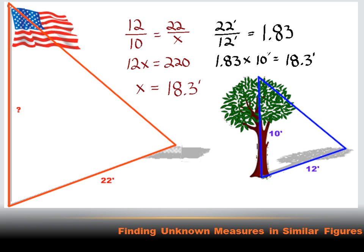We could do this another way too — we could create a proportion. We could say that 12 feet is to 10 feet as 22 feet is to x feet. Then we could cross multiply: 12x equals 10 times 22, or 220. Then we divide both sides by 12, and we come up with x — the height of the flagpole — as 18.3 feet.